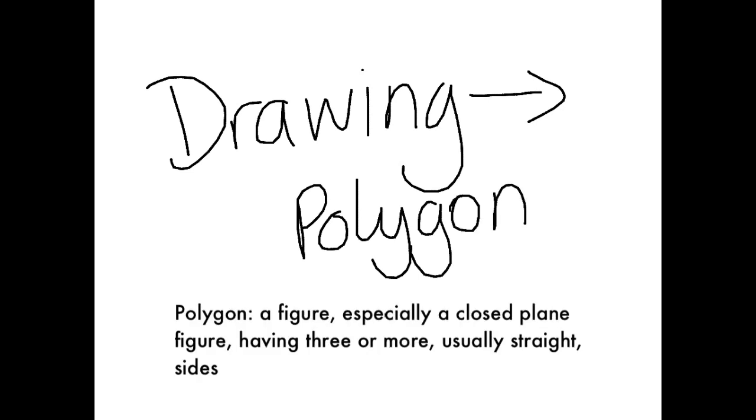So firstly, a polygon is a figure, especially a closed plane figure having three or more usually straight sides. For example, a triangle is a polygon. It's a closed in shape. It's got three straight sides in this case, which means it has three vertices.